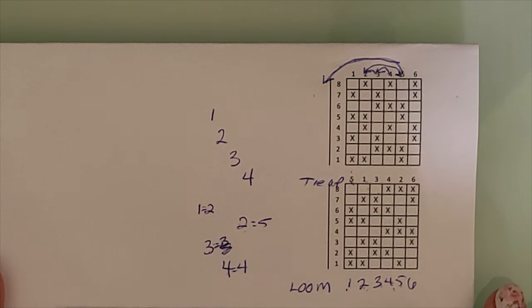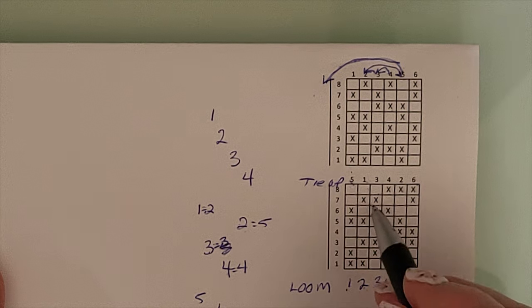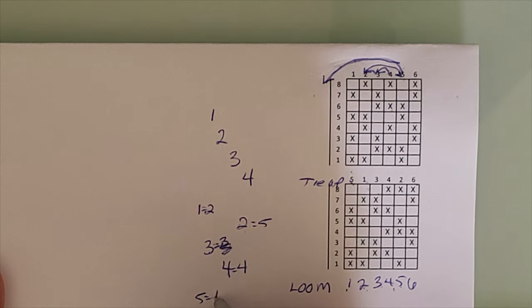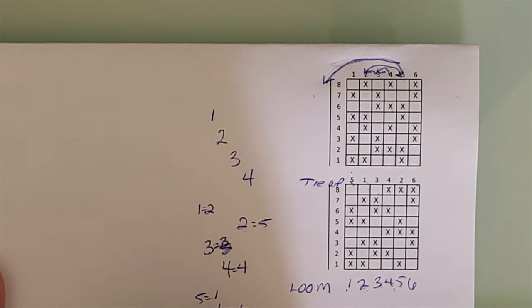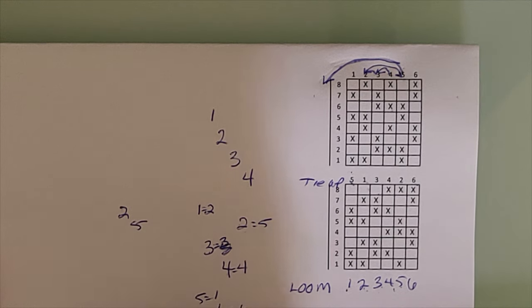Now for my tabby, which is five and six, five equals one, six equals six. So my new treadling sequence is going to be two, five, three, four. And my tabby will be one and six.